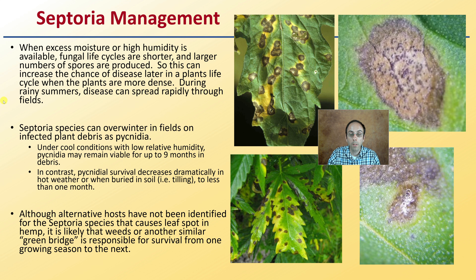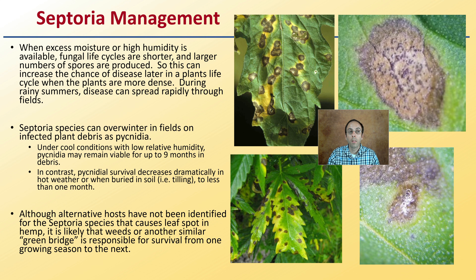Although alternative hosts have not been identified for septoria species that cause leaf spot in hemp, it is likely that weeds and other similar green bridges are responsible for survival from one growing season to the next. Odds are the pathogen spreads to another weed host, resides there, and then the following year jumps from that host to infect your hemp plants. Hopefully this gives you a little insight into septoria, which is sadly very commonly seen on cannabis.